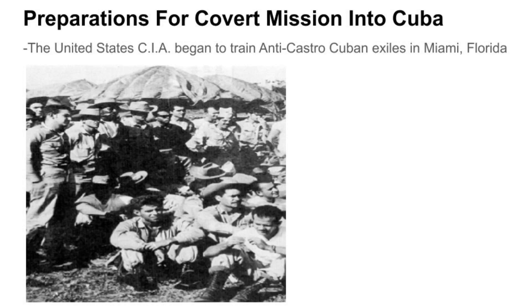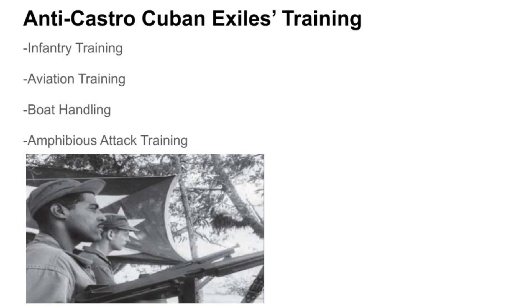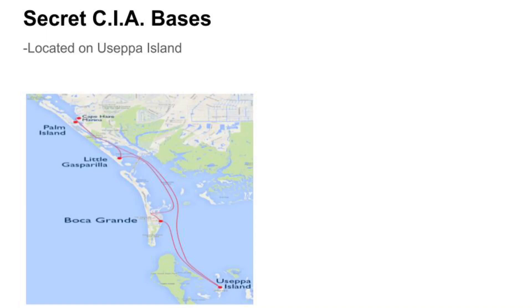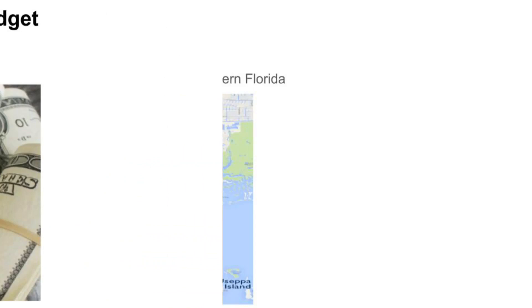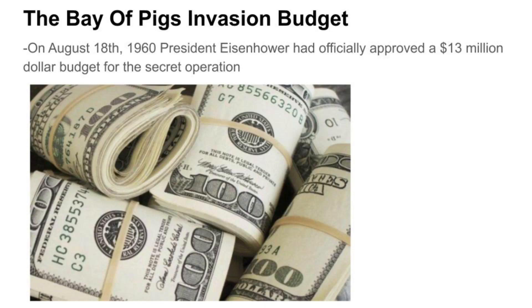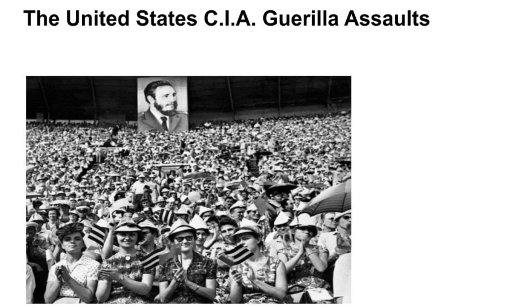To begin preparations for this covert invasion, the CIA began to train anti-Castro Cuban exiles in Miami, Florida. Infantry training, aviation training, boat handling, and amphibious attack training were all taught to these recruits in secret CIA bases located on Useppa Island and other parts of southern Florida. On August 18, 1960, President Eisenhower officially approved a $13 million budget for the secret operation.